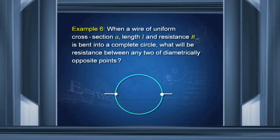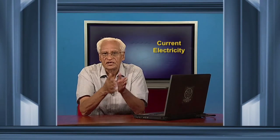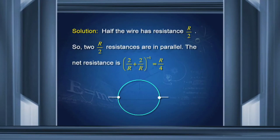Another example: when a wire of uniform cross section A and length L and resistance R is bent into a complete circle, what will be the resistance between any two diametrically opposite points? These are diametrically opposite points. This half-circle resistance and this half-circle resistance are in parallel. The total resistance is R. Therefore, half of this is R/2. This resistance is also R/2. So two resistances each R/2 are in parallel. Therefore, the net resistance is (2/R + 2/R) raised to the power minus 1, which is R/4. So the net resistance of this circuit between these two points is R/4.